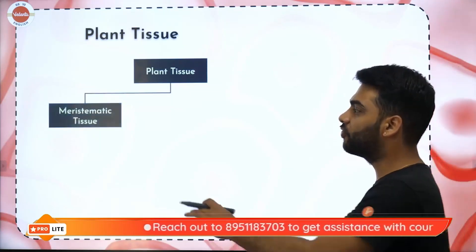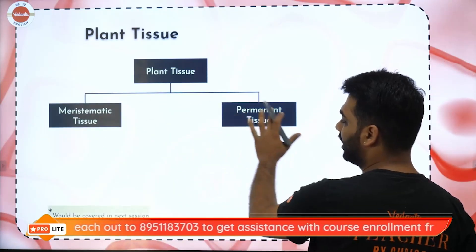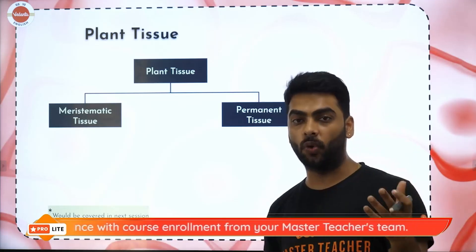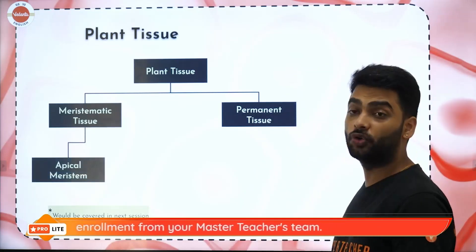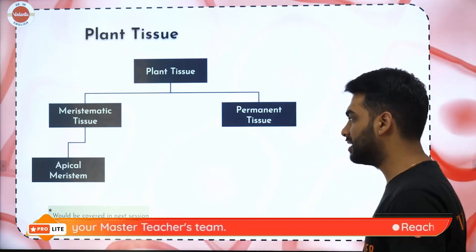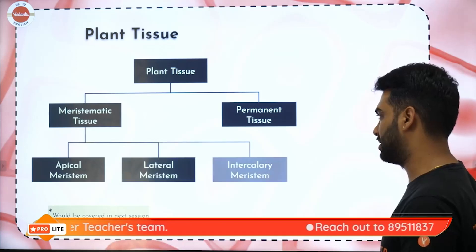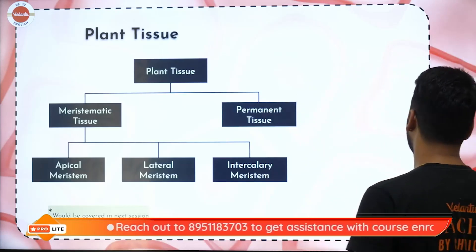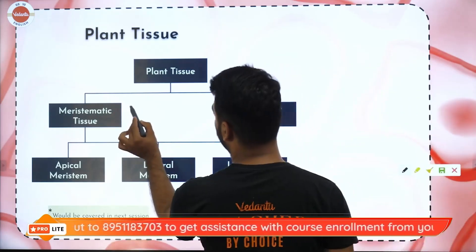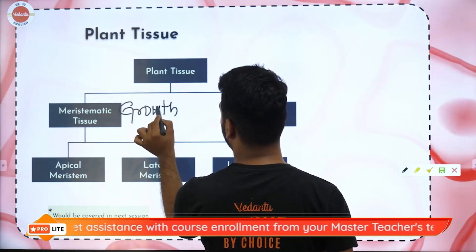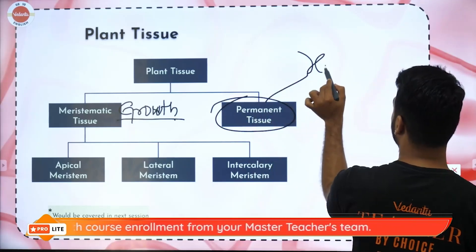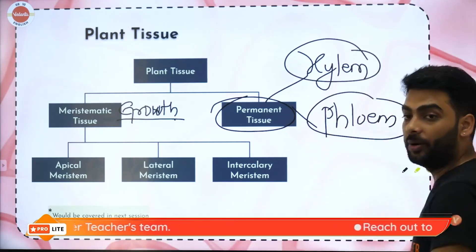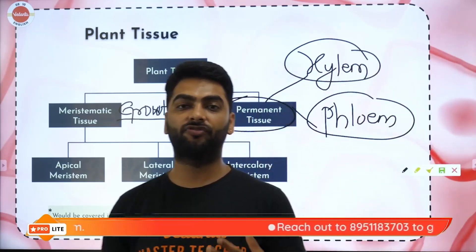When I talk about plant tissues, I have got two main types: meristematic and permanent tissues. Meristematic tissues are the tissues which are always growing, whereas permanent tissues are ones which do not grow. Meristematic tissues are the growth tissues — they will always keep on growing — whereas permanent tissues do not grow and are meant for carrying out the different processes.